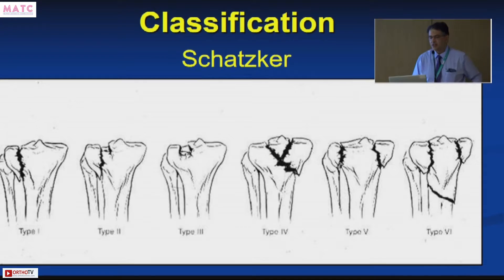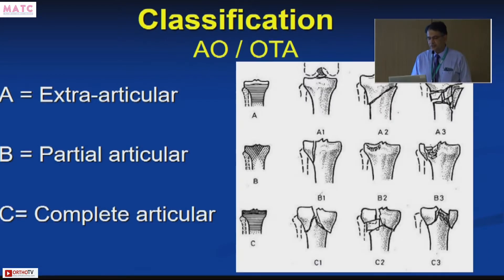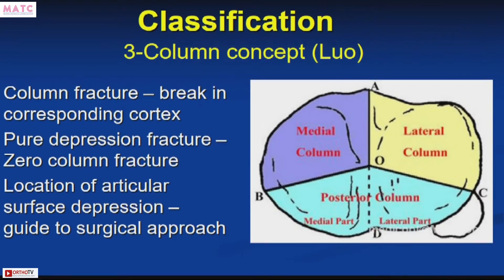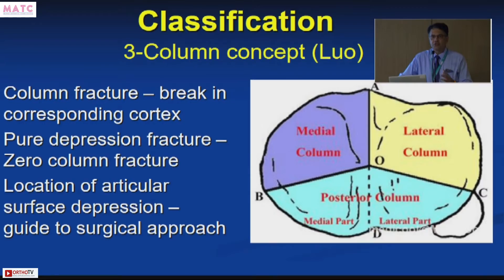Classification has also changed. We were classifying fractures based on an AP X-ray using the Schatzker or AO/OTA systems. In 2010, Luo came up with his three-column classification based on axial CT scan cuts. The proximal tibia was divided into three columns — anteromedial, anterolateral, and posterior — and the focus was on identifying any cortical break in each column. Based on how many columns are fractured, you have a one-, two-, or three-column fracture.